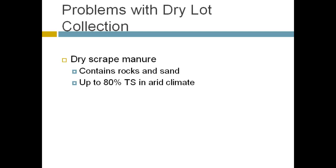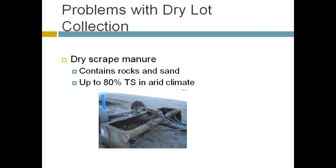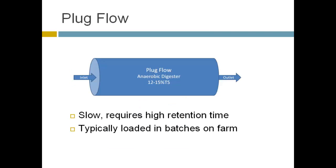To be careful here: our research is consistent with the prior presenter's finding that organic content is substantial in dry lot collected waste, and we've achieved good methane production with that kind of manure. However, the problem comes more in the operation of conventional technologies. Dry scrape manure contains rocks and sand and can be up to 80 to 90% solids in arid climates. Collection approaches always vary and it's very difficult to avoid getting soil, sand, and rocks into the material.